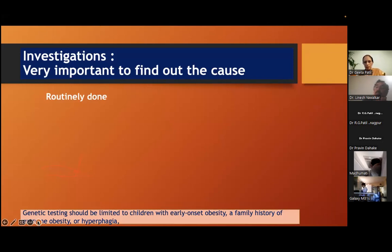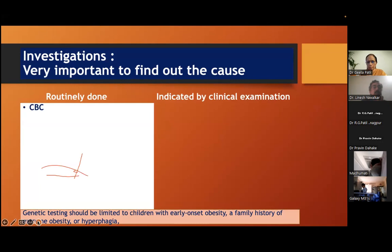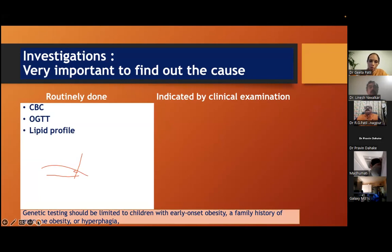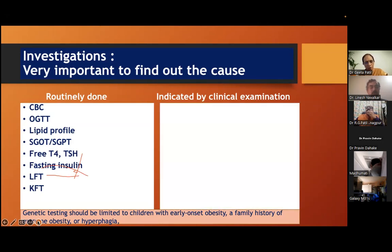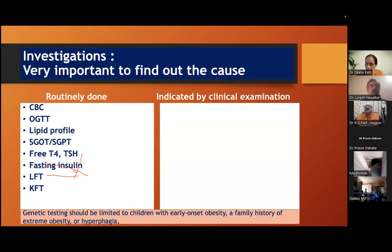Now for investigations — our patient Malvika was thoroughly investigated, but do we need to do all investigations all the time? No. Routinely: blood count, oral glucose tolerance test depending on severity of obesity, lipid profile, SGOT/SGPT, free T4, TSH, fasting insulin, LFT, kidney function tests. If there is hirsutism, acne, or acanthosis nigricans — to rule out PCOD — abdominal ultrasonography. Reserve investigations according to clinical examination. We don't need to do all investigations for all patients.